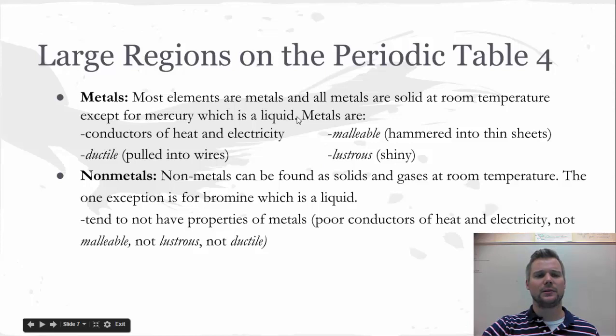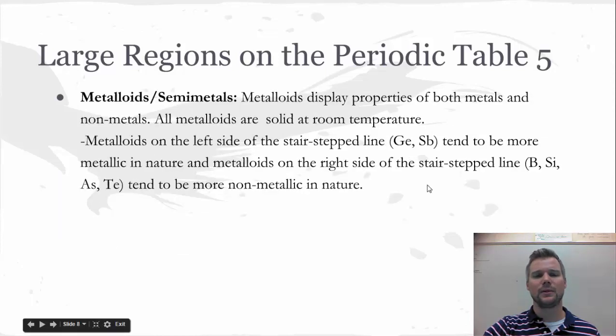So, we already talked about metals being conductors, ductile, malleable, and lustrous. And then non-metals are going to be not malleable, not lustrous, not ductile. Metalloids, a combination of the two. And depending on what side of the stairs, we're going to find that they tend to display that kind of property more often than the other. If they're on the right side, more non-metallic. On the left side, more metallic.